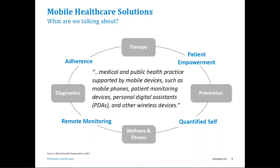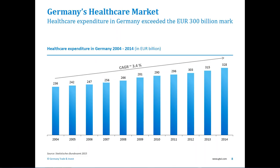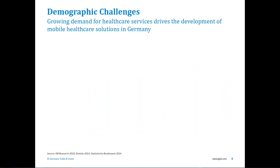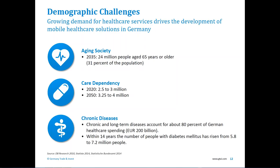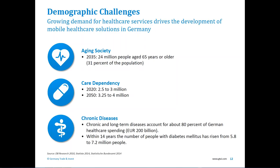So why do we need mHealth in Germany? Germany's healthcare expenditure is constantly rising. They already exceeded the 300 billion euro mark. One reason is medical and technical advancement, but we also have quite challenging developments in Germany. We are an aging society — the oldest population in Europe and the second oldest in the world after Japan. The number of care-dependent people in Germany is rising, as is the number of patients with chronic diseases or multiple diseases at the same time.